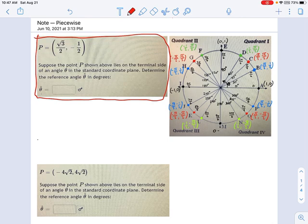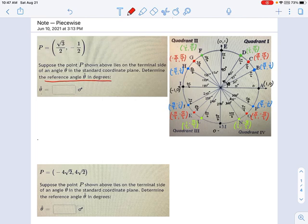Suppose you have this point P on the terminal side of an angle in the standard coordinate plane. It wants to know what is the reference angle in degrees.